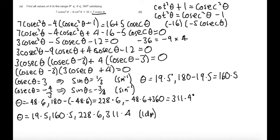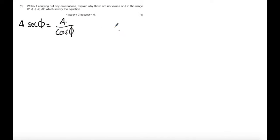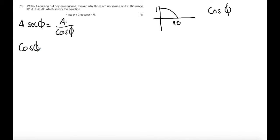Now let's look at Part B, which asks us to explain, without carrying out any calculations, why there are no values of φ in 0° ≤ φ ≤ 90° satisfying 4secφ + 3cosecφ = 6. Starting with 4secφ: this equals 4/cosφ. Considering the graph of cosφ between 0° and 90°, cosφ is always less than or equal to 1.